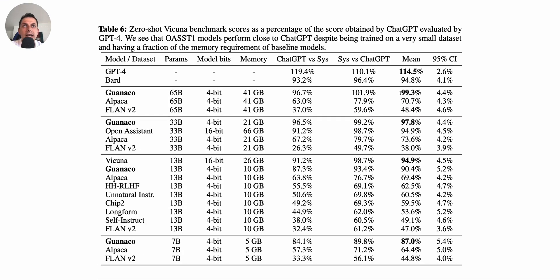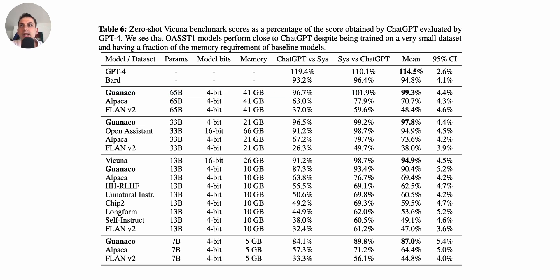One interesting table from the paper shows zero-shot benchmark scores as a percentage of the score obtained by ChatGPT, evaluated by GPT-4. The Guanaco model — the 65 billion 4-bit model with 41 GB of memory — reaches 99.3% on this benchmark, which is higher than BARD.